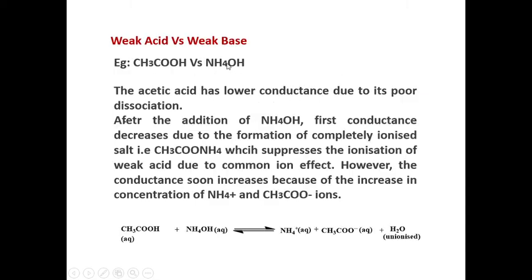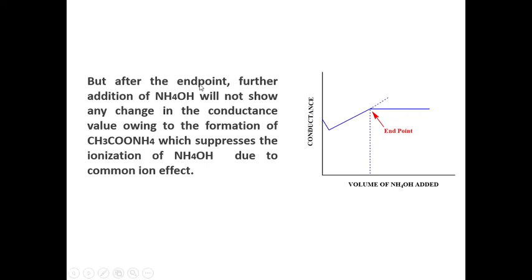The last case is weak acid versus weak base — acetic acid and ammonium hydroxide. Acetic acid has lower conductance due to its poor dissociation. After addition of ammonium hydroxide, conductance first decreases due to the formation of completely ionized ammonium acetate, which suppresses the ionization of the weak acid by the common ion effect. Conductance soon increases due to the rise in ammonium and acetate ion concentrations. After the neutralization point, further addition of ammonium hydroxide shows no change in conductance, owing to ammonium acetate suppressing the ionization of ammonium hydroxide.